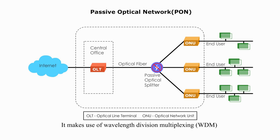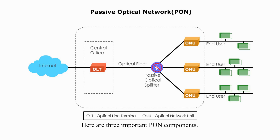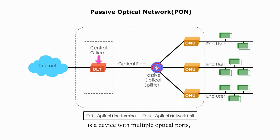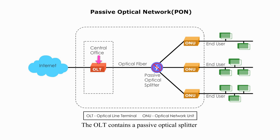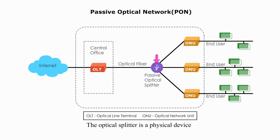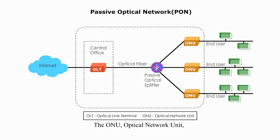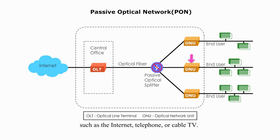PON makes use of Wavelength Division Multiplexing (WDM) technology to increase bandwidth per fiber. There are three important PON components. The OLT (Optical Line Terminal) at the carrier's central office is a device with multiple optical ports, similar to ports on a router. The OLT contains a passive optical splitter that subdivides each port to up to 32 end users. The optical splitter is a physical device requiring no electricity — that's why the network is called passive. The ONU (Optical Network Unit) terminates the PON and delivers services to users, such as internet, telephone, or cable TV.